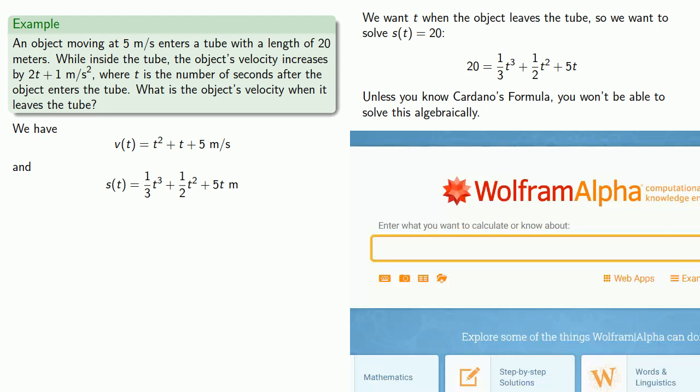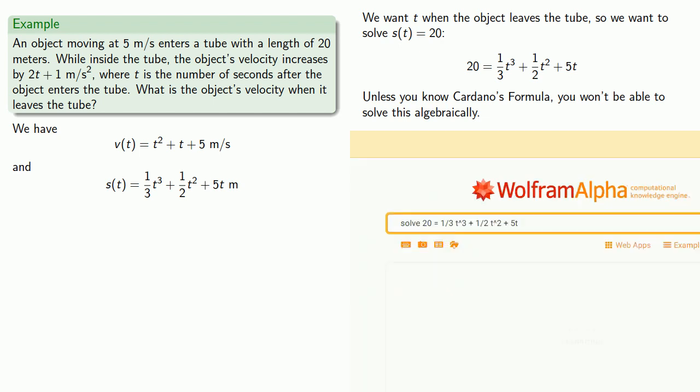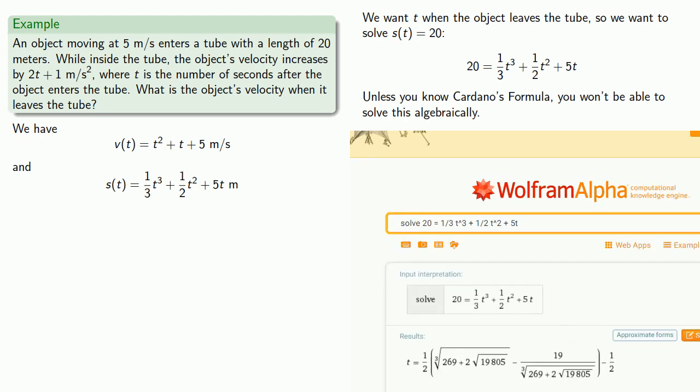We'll ask it to solve 20 equals 1 third t cubed plus 1 half t squared plus 5 t. We'll hit enter and let Wolfram Alpha compute for a minute, and our answer comes up as this rather frightening expression. Fortunately, we can find an approximate form of the expression, and that'll give us our approximate solution.